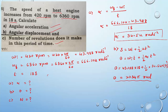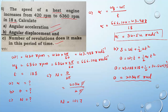For question C, number of revolutions N = θ/(2π). Substituting θ = 2034π: N = 2034π/(2π). Pi cancels, giving N = 1017 revolutions. So the engine makes 1017 rotations in the given time period.